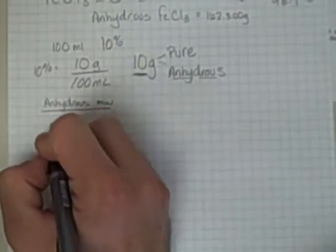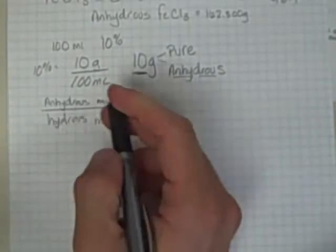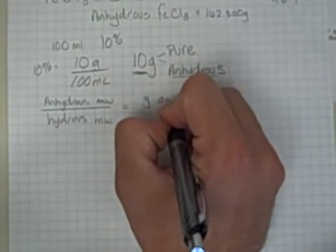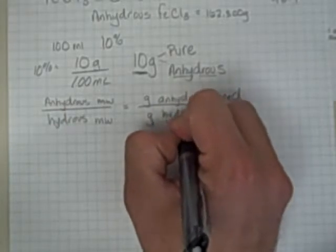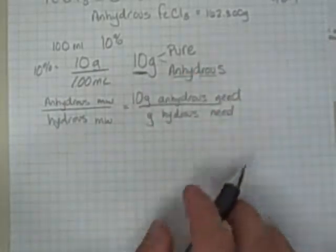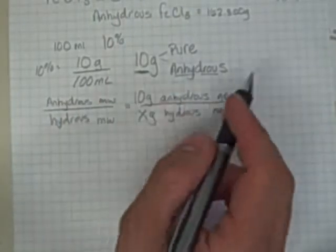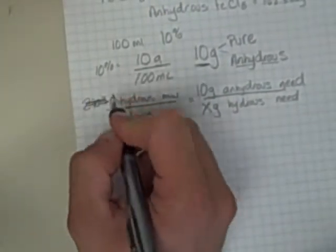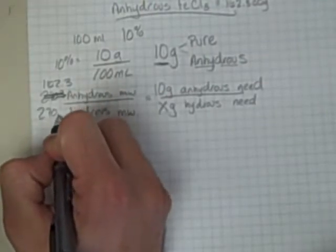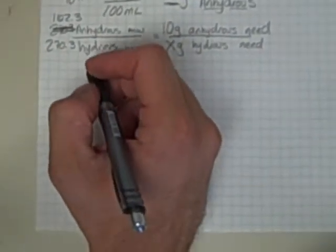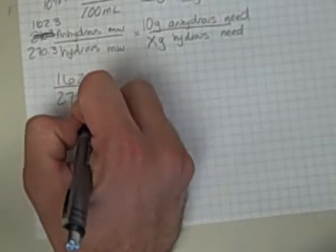I can use the ratio of my anhydrous molecular weight compared to my hydrous, or sometimes you'll hear this called hydrated, molecular weight. So I simply set this up. The ratio of my anhydrous to my hydrous is going to be the same as the grams of anhydrous that I know that I need compared to the grams of hydrous that I need. In this case, I know that I would need 10 grams of anhydrous. What I don't know is how many grams of the hydrous stuff I would need. So I use this ratio, which in this case is 162.3 anhydrous compared to 270.3.